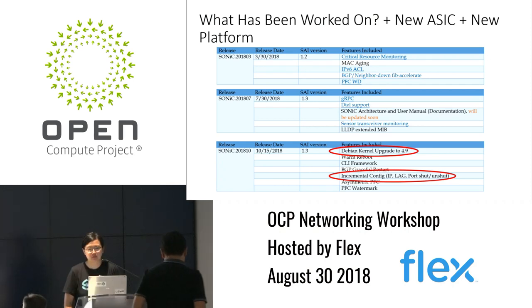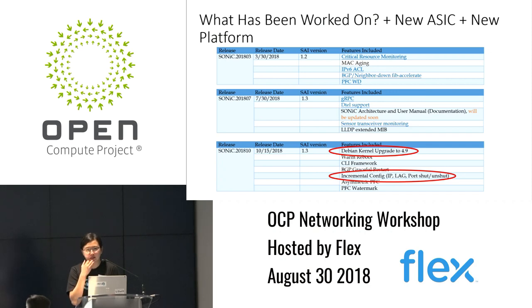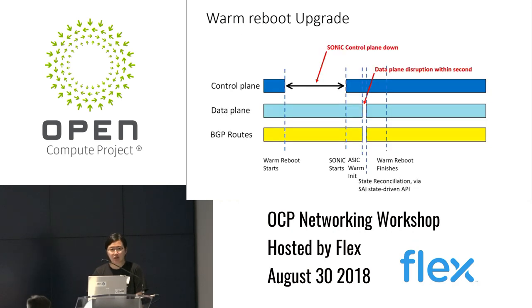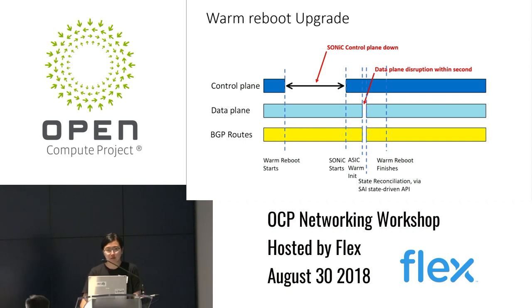After we reboot, once BGP has reestablished, we'll do routes reconciliation — basically find out the difference in routes and then sync those different routes into the ASIC. It depends on a timer-based approach, and also based on BGP signals like end-of-RIB. Once we receive the full routes from neighbors, we can sync the routes into the ASIC. There is a session in the afternoon on BGP graceful restart, so we can discuss more details there. We also have Q&A sessions.